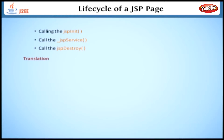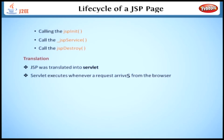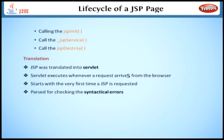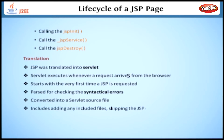Let us start with translation. As we discussed earlier, the JSP is translated into a Servlet, and the Servlet executes whenever a request arrives from the browser. The lifecycle starts with the very first time a JSP is requested. As this is the first request, it is passed for checking syntactical errors and then converted into a Servlet source file. The translation includes adding any included files, skipping JSP comments, and leaving any HTML comments.